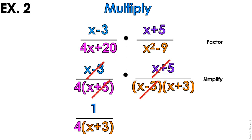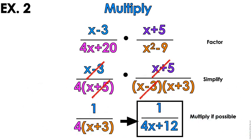1 over 4, parentheses x plus 3. And if you can, multiply anything that's left so that your problem looks nice and neat and tidy for your final answer.